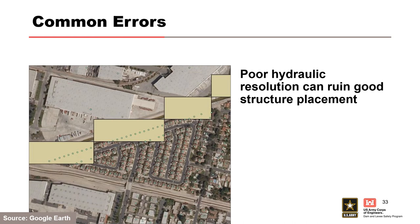What do you do in that situation? You could ask the hydraulic modeler for finer detail, but that's going to be really expensive and create enormous files. Maybe the best solution is simply to move those structures out of the way so they receive depths relative to the overbank area rather than the channel. This is a quick and easy fix that gets you a reasonable result without having to redo the hydraulic modeling.